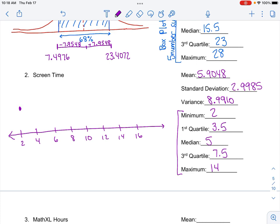The minimum amount of time that people spend on their phone is 2 hours. While the maximum amount of time that people spend on their phone is 14, which is crazy to me. So, we're going to create this box plot. We have our five number summary here. Minimum is 2. First quartile is 3.5. Median is 5. Third quartile is 7.5. And maximum is 14.